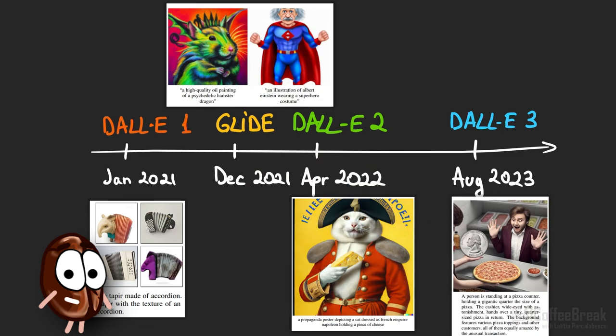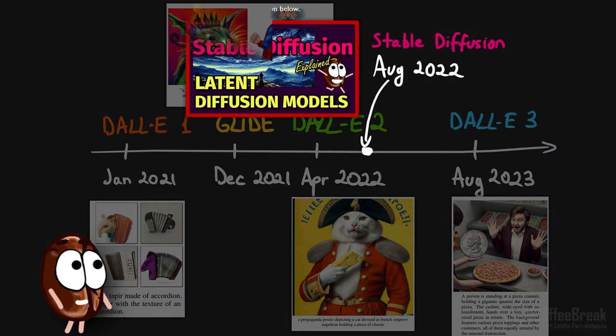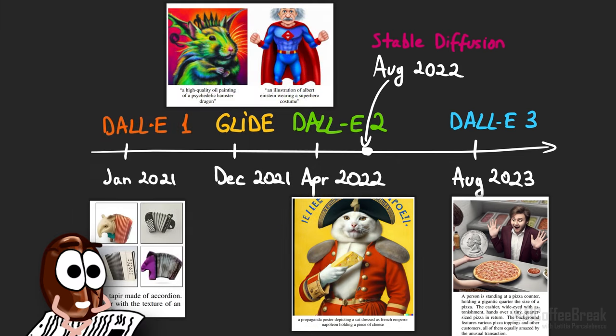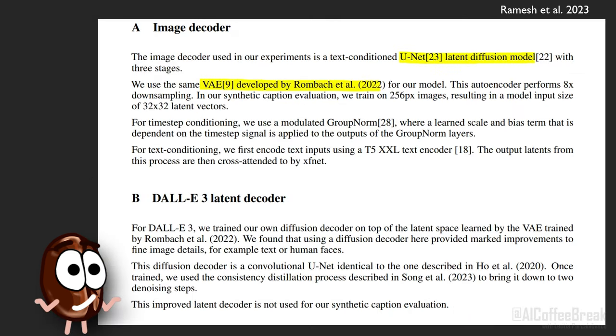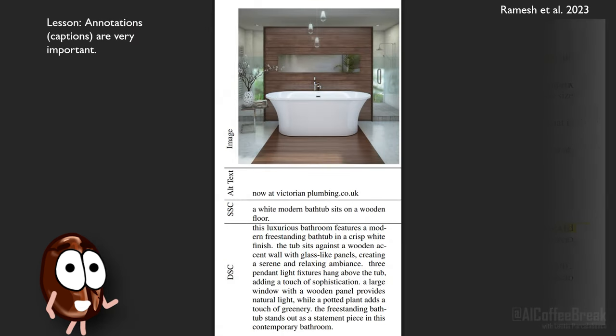DALL-E 3's ideas are building on latent diffusion models — the architecture in Stable Diffusion, released August 2022 with researchers from LMU Munich and Runway ML. What OpenAI has disclosed about DALL-E 3 is not so much about the architecture: it is a latent diffusion model based on a UNet and uses T5 for encoding the text prompt. But further technical changes are undisclosed.